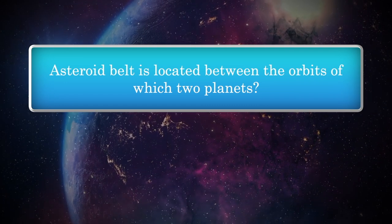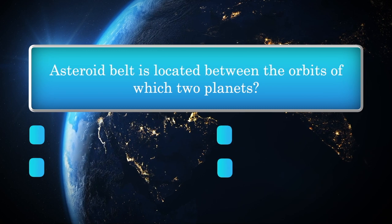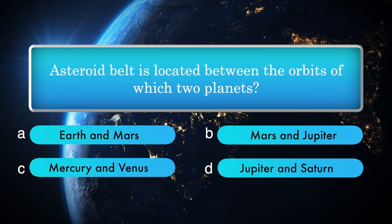Asteroid belt is located between the orbits of which two planets? Options: Earth and Mars, Mars and Jupiter, Mercury and Venus, Jupiter and Saturn.